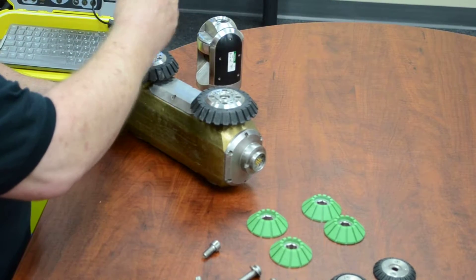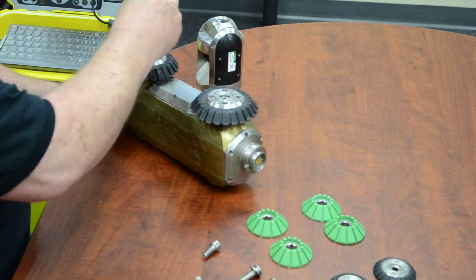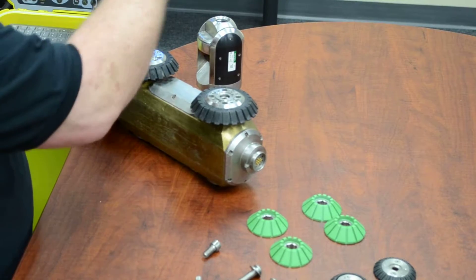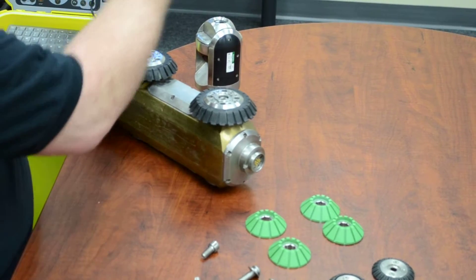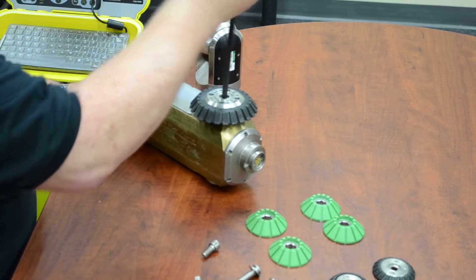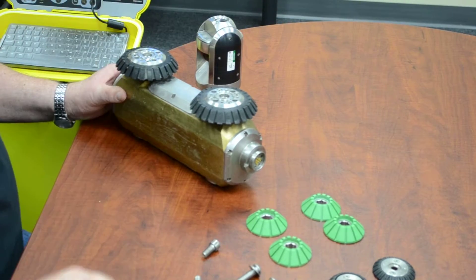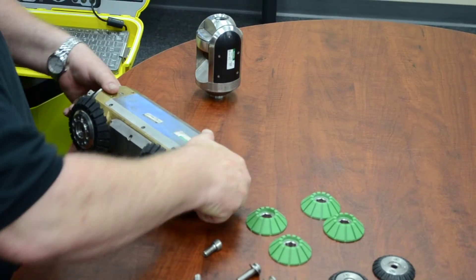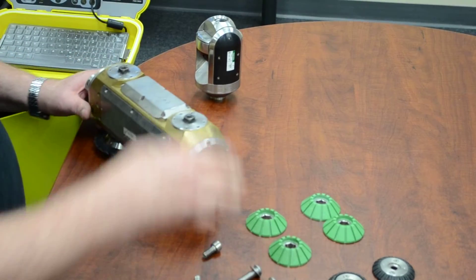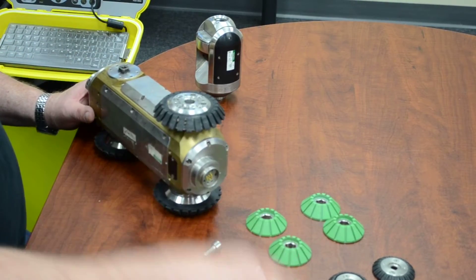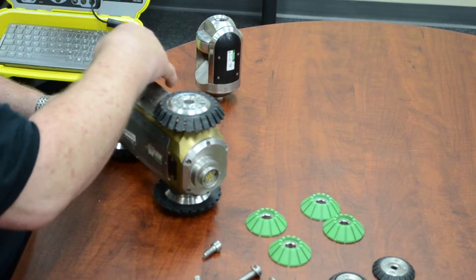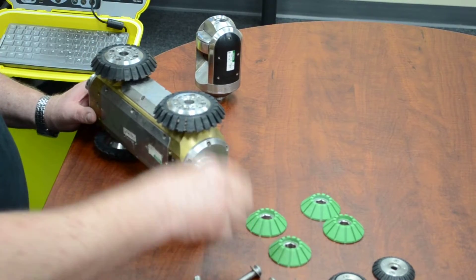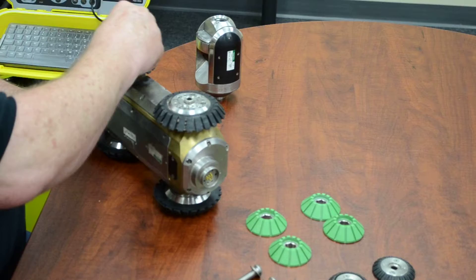There should be a lock ring behind each of these wheels that stays in the tire itself that keeps it from backing out. Now we'll flip this over to the other side.